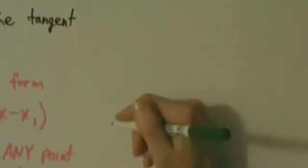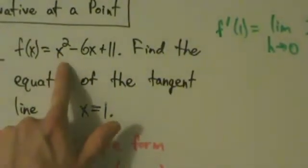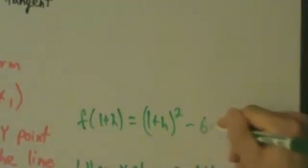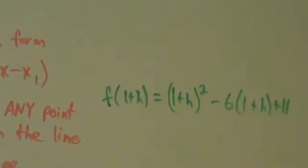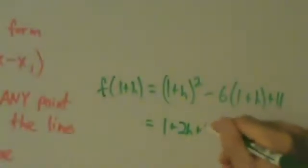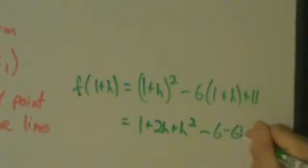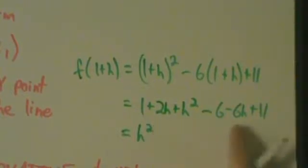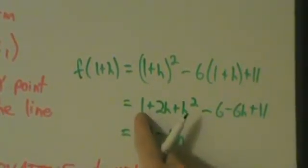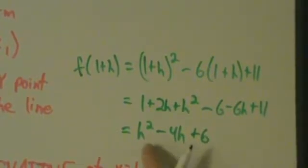f of 1 plus h equals the quantity 1 plus h squared minus 6 times 1 plus h, plus 11. Expanding: 1 plus 2h plus h squared minus 6 minus 6h plus 11. Combining like terms: h squared plus 2h minus 6h is minus 4h, and 1 minus 6 plus 11 is 6. So f of 1 plus h equals h squared minus 4h plus 6.